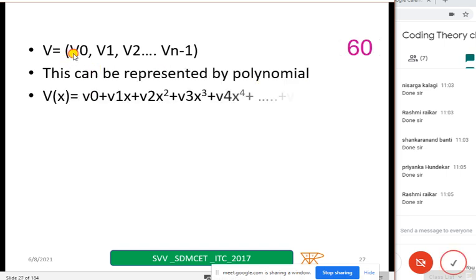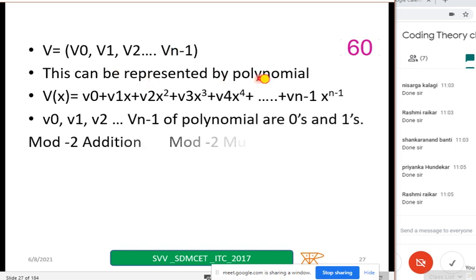V equal to V0 V1 V2, you have taken this, these are zeros and ones, so this can be represented by a polynomial. V of x equal to V0 plus V1 x plus V2 x square plus V3 x cube plus plus plus V n minus 1 into x to the power n minus 1, because we have started at zero, therefore it is n minus 1.